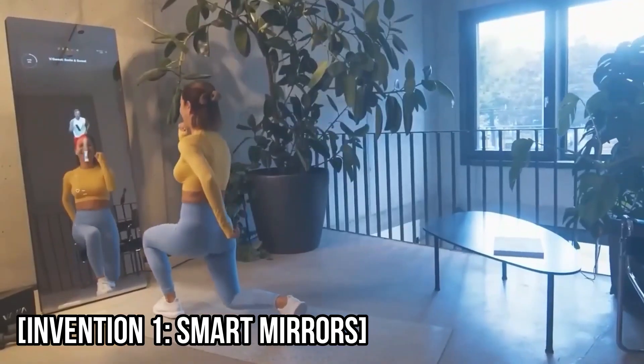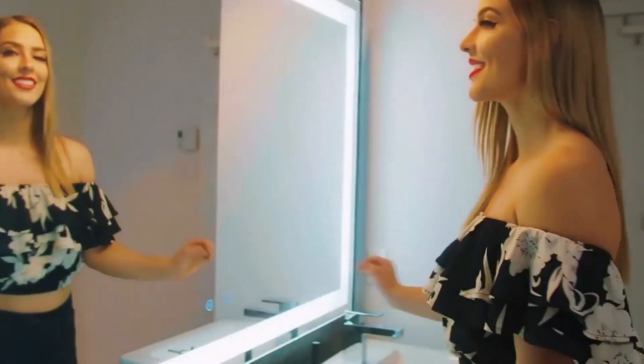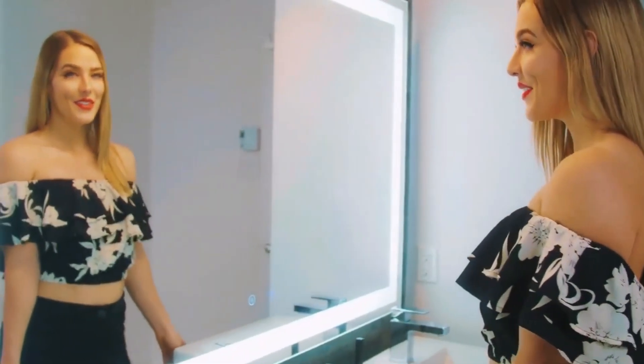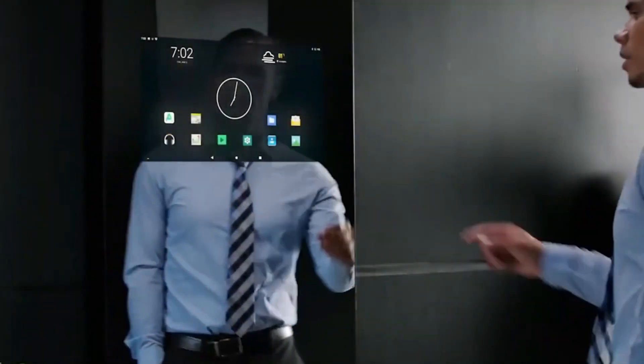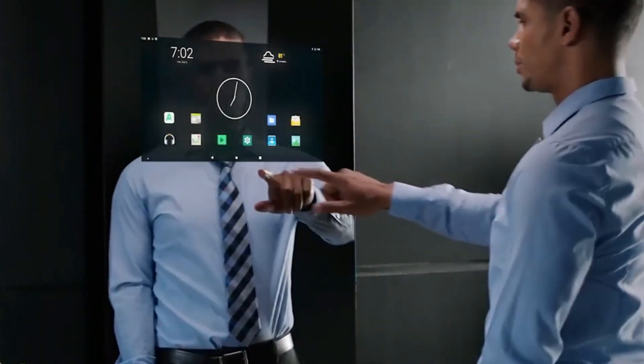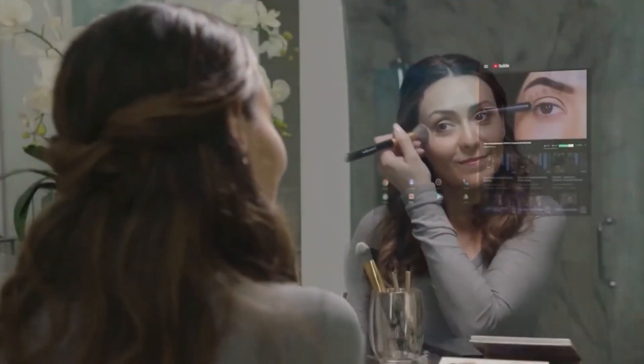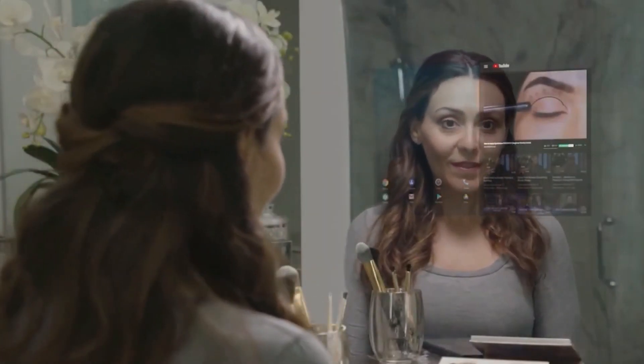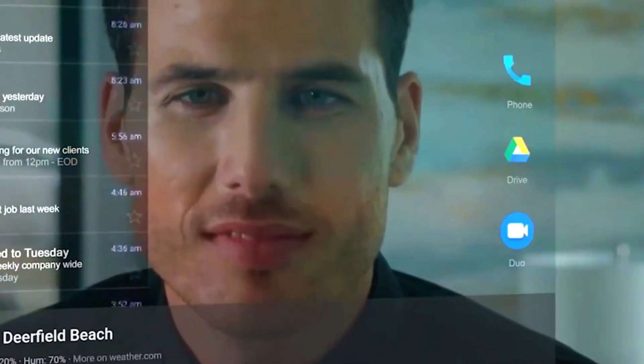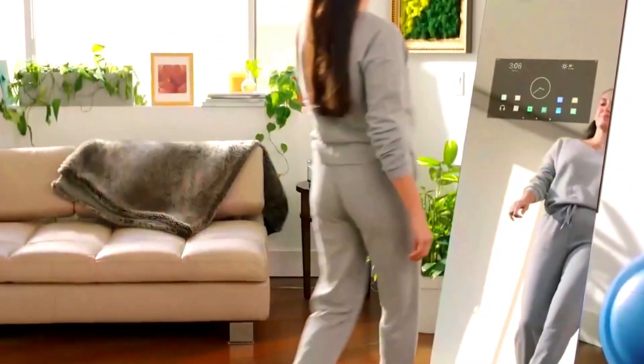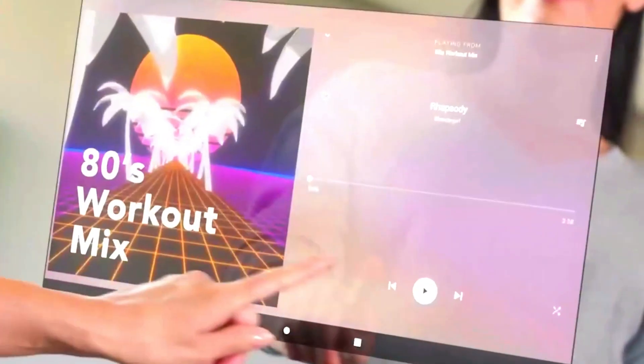Invention 1: Smart Mirrors. First on our list are smart mirrors. These are mirrors that can display information such as the weather, news updates, and even your fitness progress. Not only that, but they can also analyze your skin and recommend skincare routines. With this invention, getting ready in the morning will become a lot more convenient.